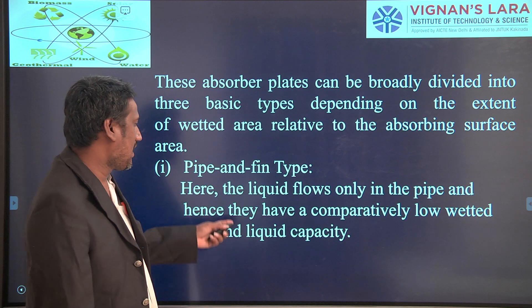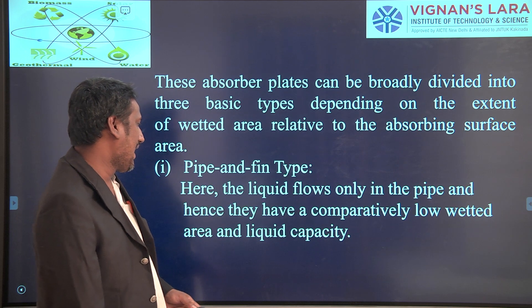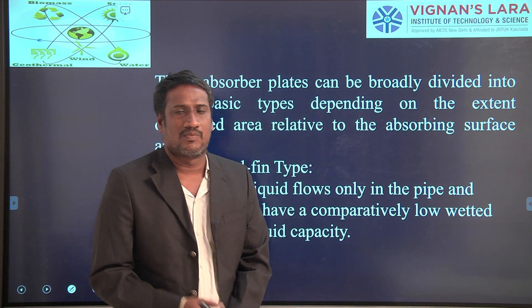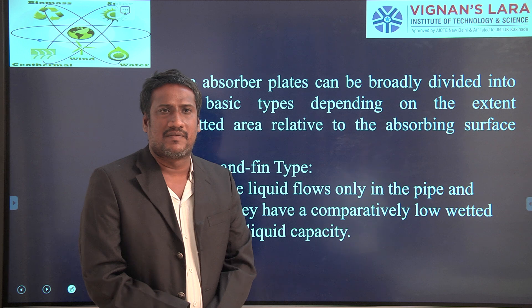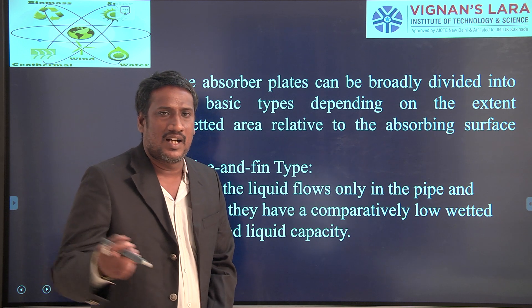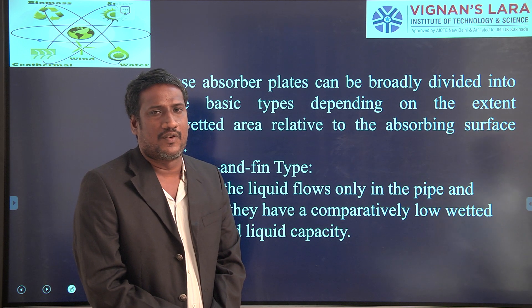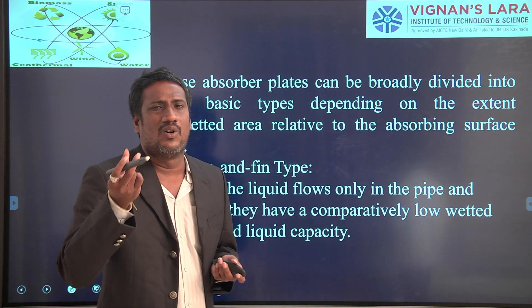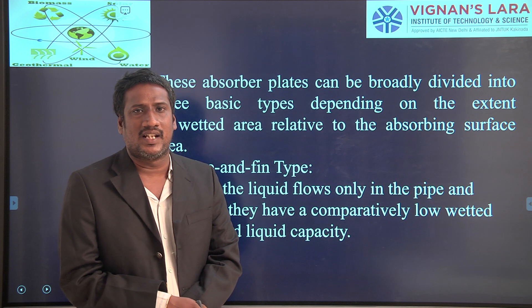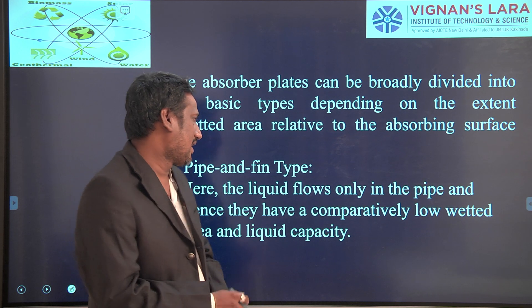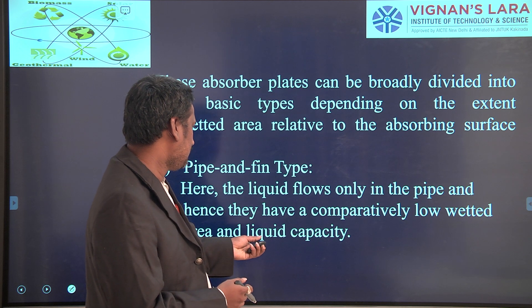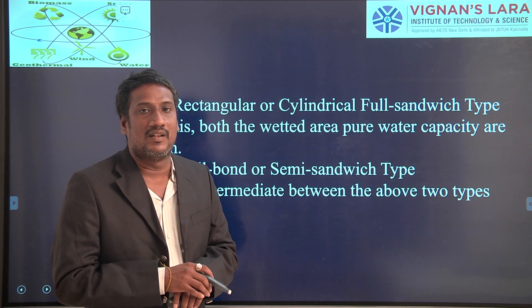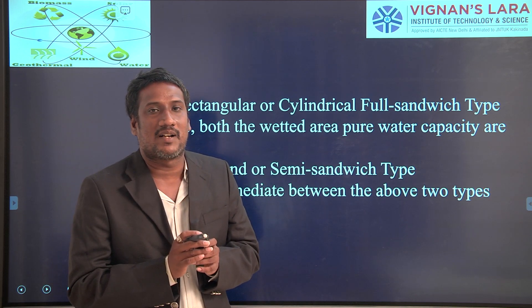In the pipe and fin type, liquid flows only in the pipe, so they have a comparatively low wetted area and low liquid capacity. Small diameter pipes are there, through which water flows. Because of the low wetted area, you cannot get more temperatures — or rather, you may get higher temperatures but only a small quantity of water will be heated in the pipe and fin type.